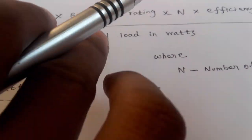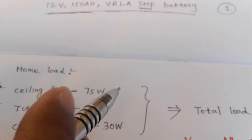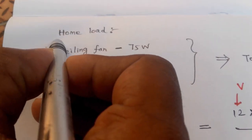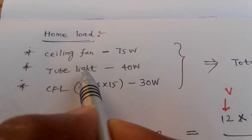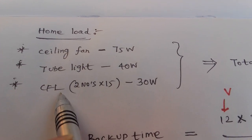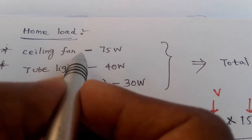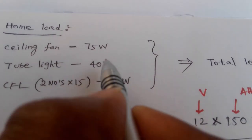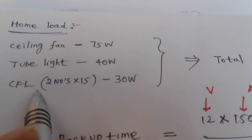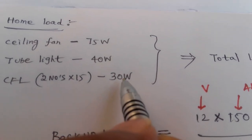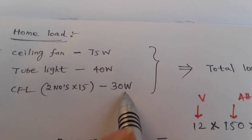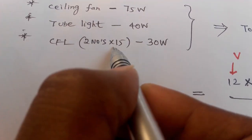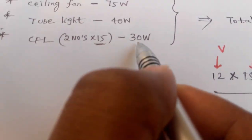So if you have a home load connected to the inverter - a ceiling fan at 75W, a tube light at 40W, and a CFL at 30W (the CFL is 10W times 3, which equals 30W).